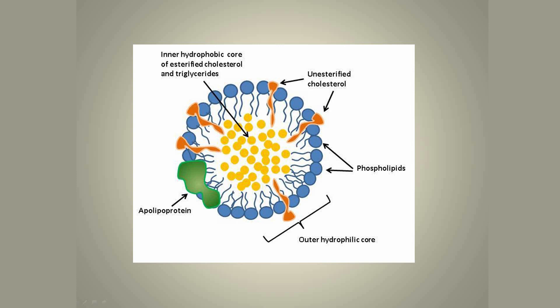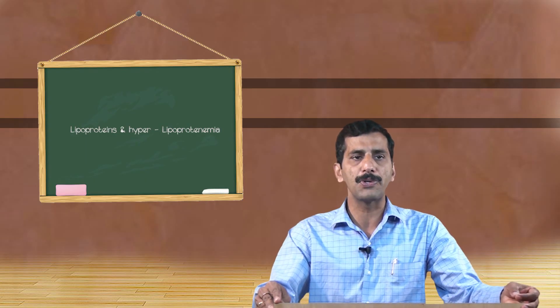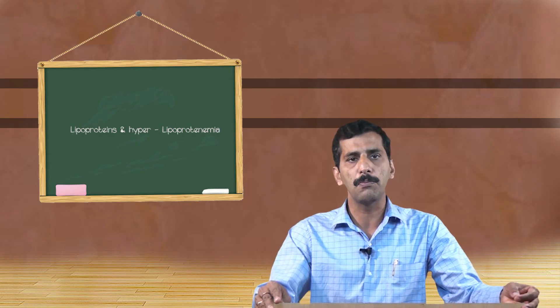These lipoproteins help in the transport of lipids from different parts of the body because lipids are insoluble in water. So these lipoproteins, being miscible, help in the transport of these non-polar lipids from one place to another. The major lipids present in the lipoproteins are triacylglycerol, phospholipids, cholesterol, and cholesterol ester, and the protein part of lipoproteins are called apolipoproteins.